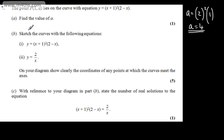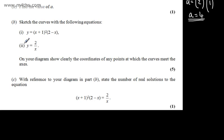In part B, we're asked to sketch the curves with the following equations. The first one: y is equal to x plus 1 all squared multiplied by 2 minus x, and the second one: y is equal to 2 over x. On the diagram, show clearly the coordinates of any point at which the curves meet the axes.